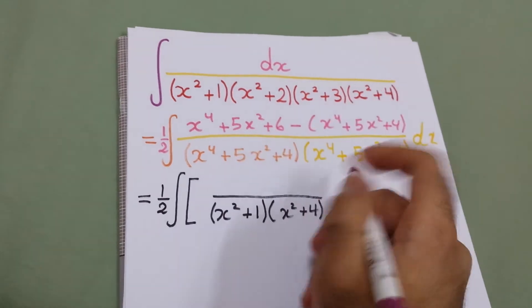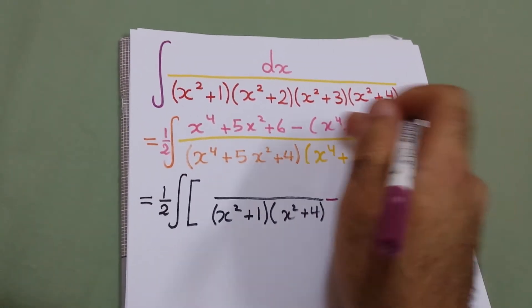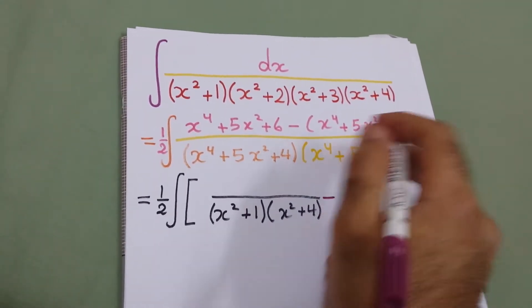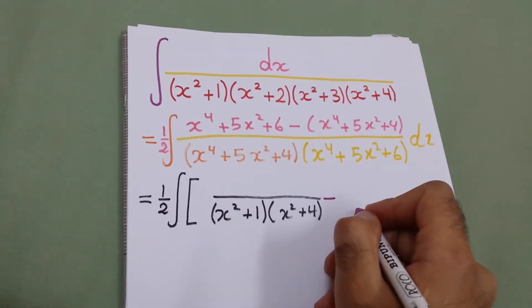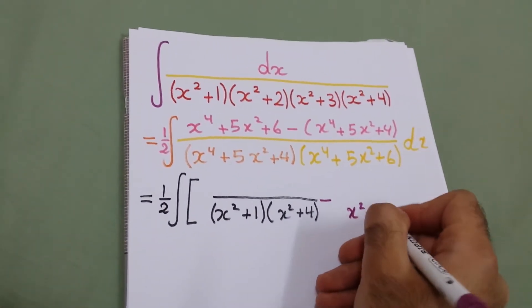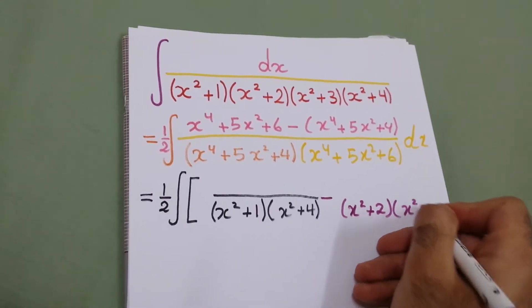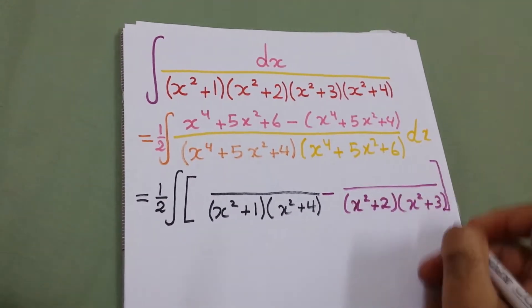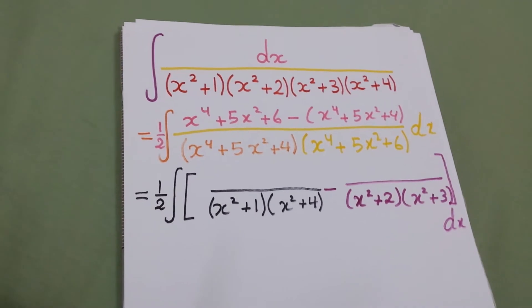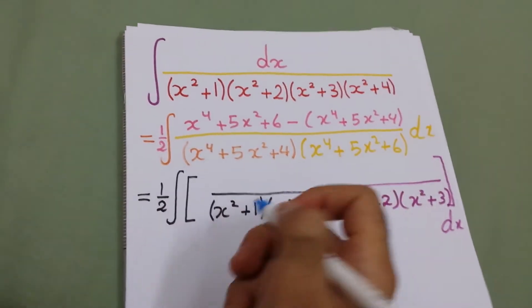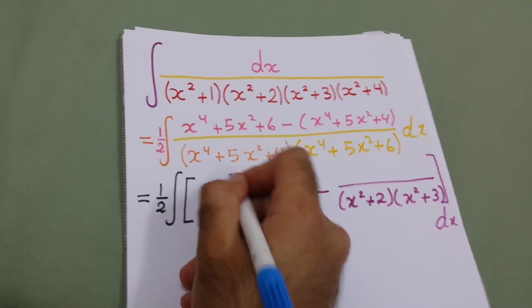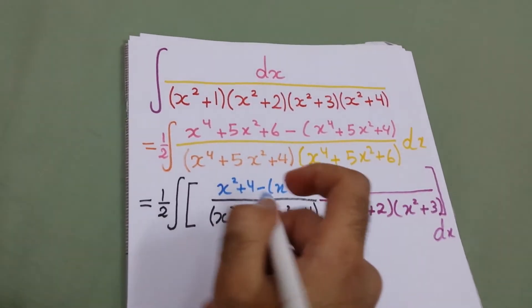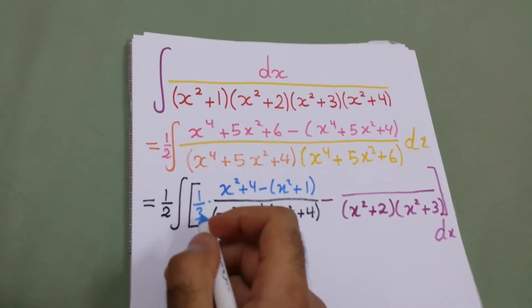Minus we have this will go with this, so we will have the denominator which is the multiplication between these two brackets: x squared plus 2 and x squared plus 3, dx. The numerator of these should be 1, but what we will do is write here x squared plus 4 minus x squared plus 1, so this is just 3, and we will divide by 3 to make it 1.